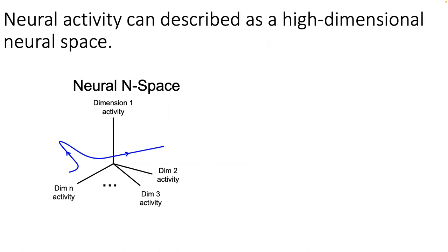What are neuromanifolds? Neural activity can be described as a high-dimensional neural space. You start with some part of the brain, described as a collection of neurons, where the dimensionality is the number of neurons and the value on each dimension is the firing rate of that neuron — I call this the neural space. You can also use voxels in fMRI or pixels in calcium imaging. The blue trace on the screen depicts neural activity as it moves through this neural space, called a neural trajectory, with arrows indicating the passage of time.